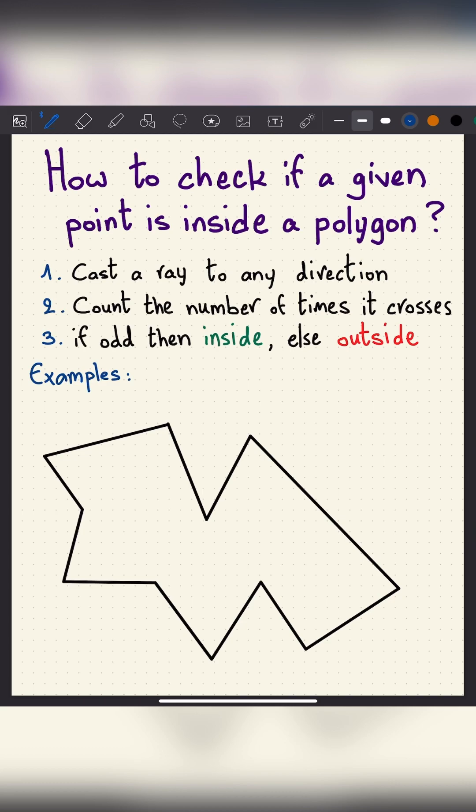Let's see two examples. Let's say we have this point. Now we cast a ray, let's say to the right. And now, let's count the number of times it crosses. So we have one, two, three times. Three is odd, so this point is inside.